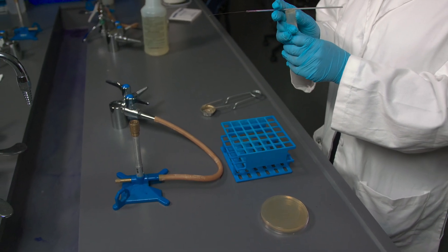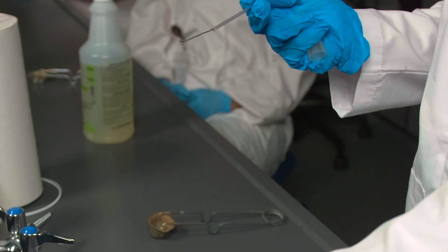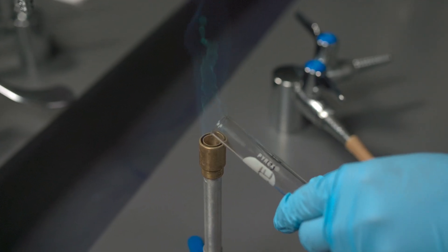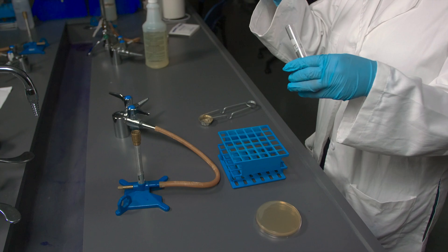Remove the cap and store it on your pinky finger. Flame the rim of the broth tube. Insert the loop into the broth gently.